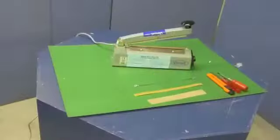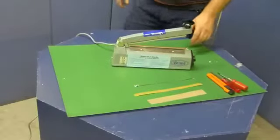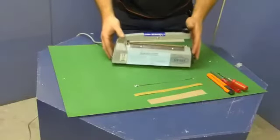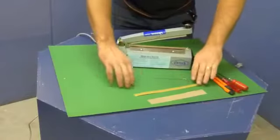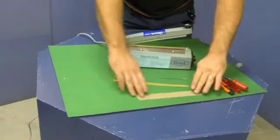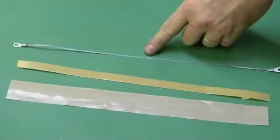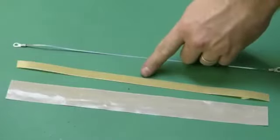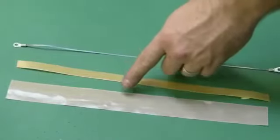Today we will be going through how to change the consumable items on a small benchtop sealer. When starting this process, please ensure that the power is disconnected from the power supply. We will be changing the element, the lower teflon, and the upper teflon.